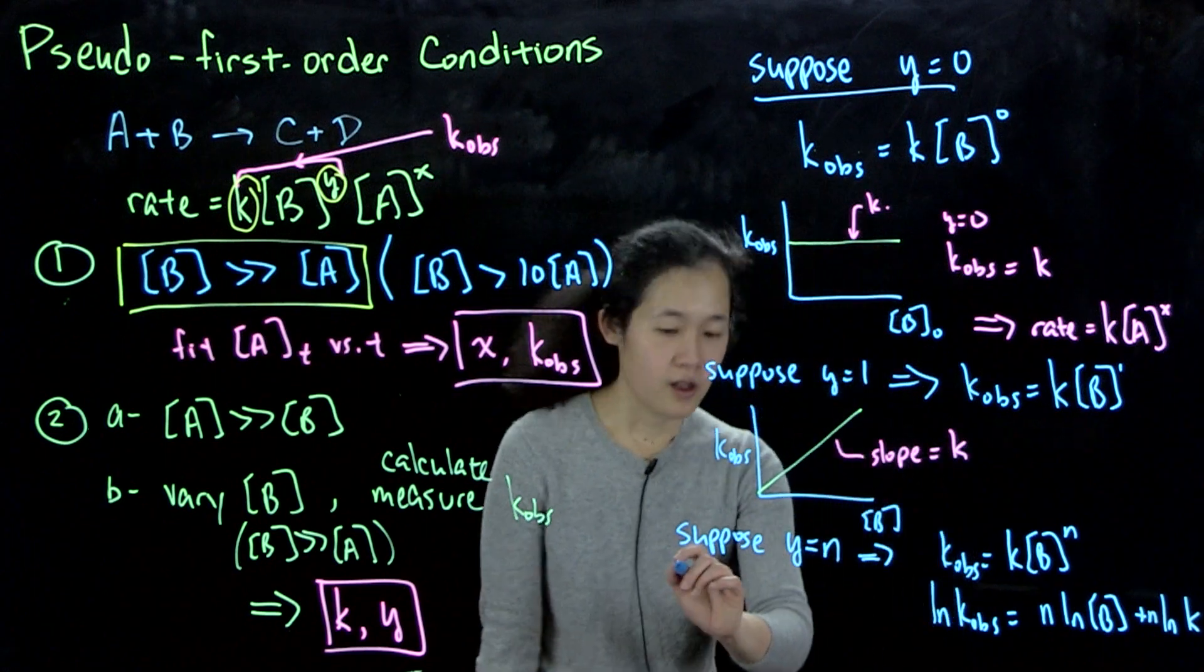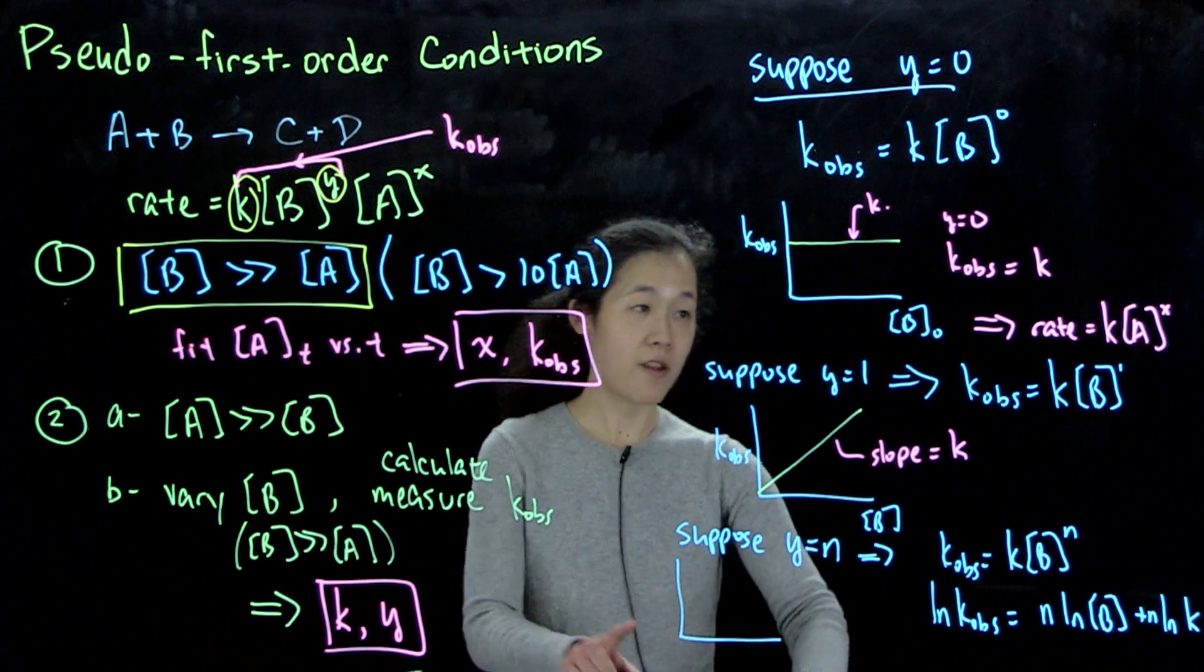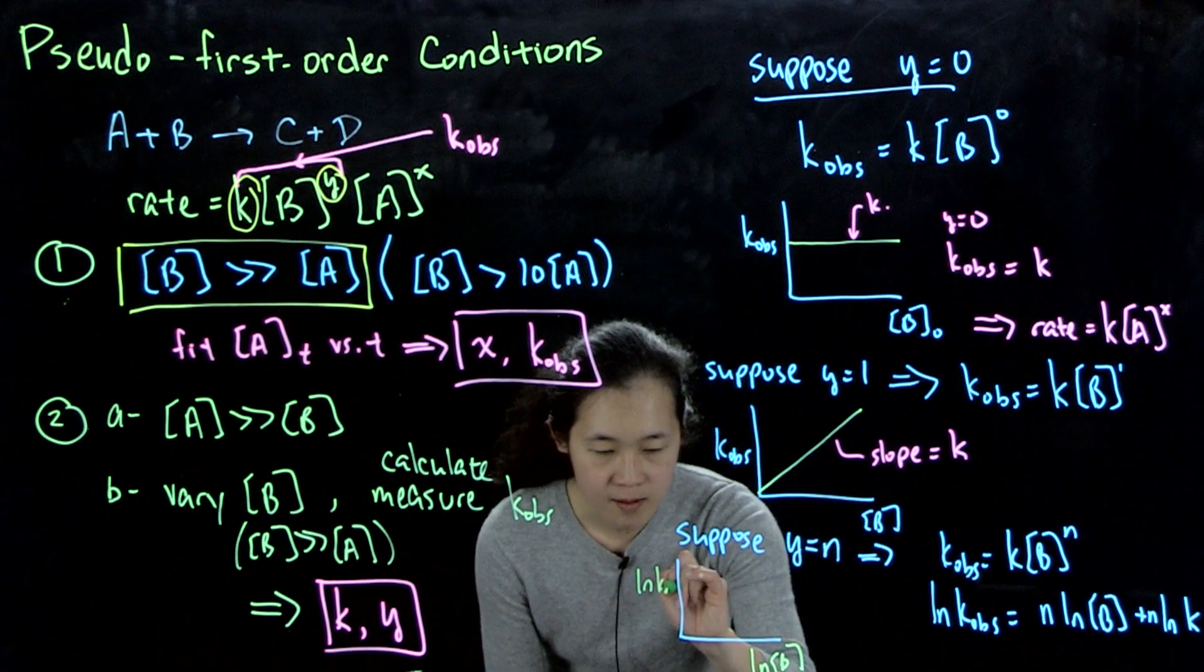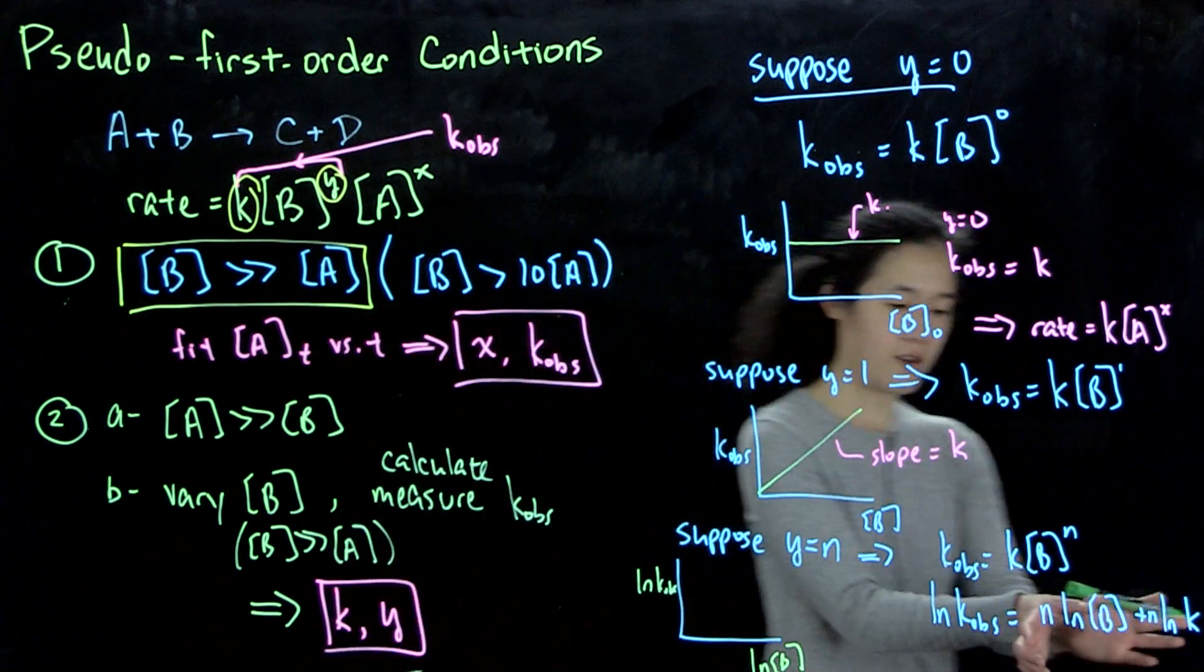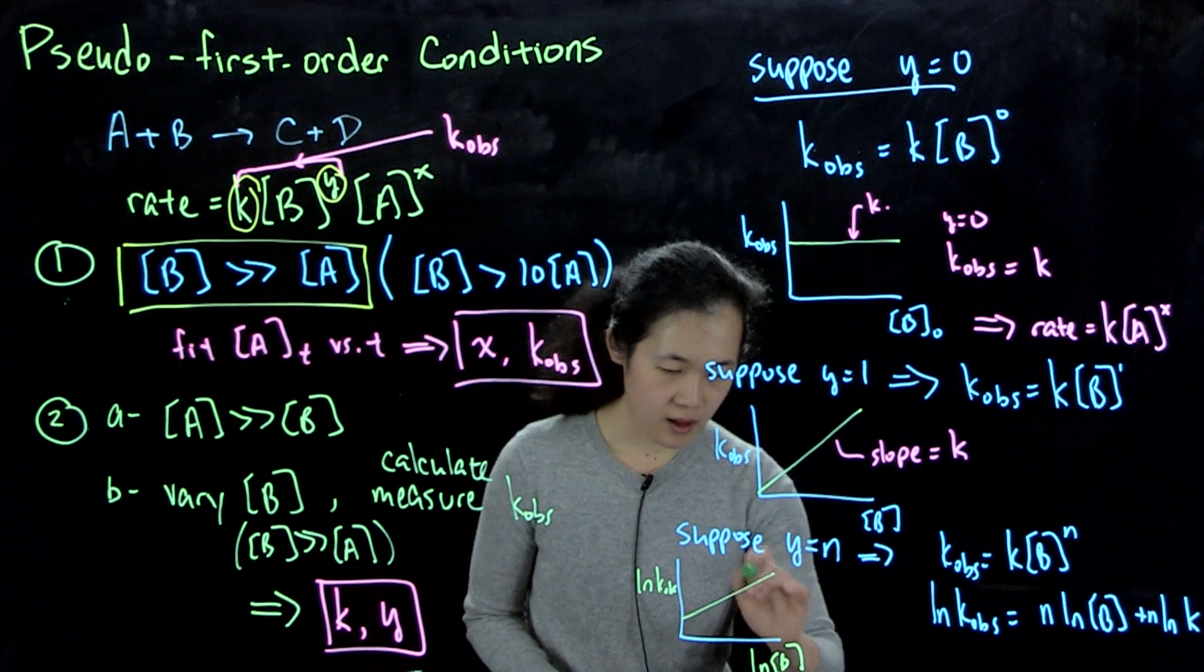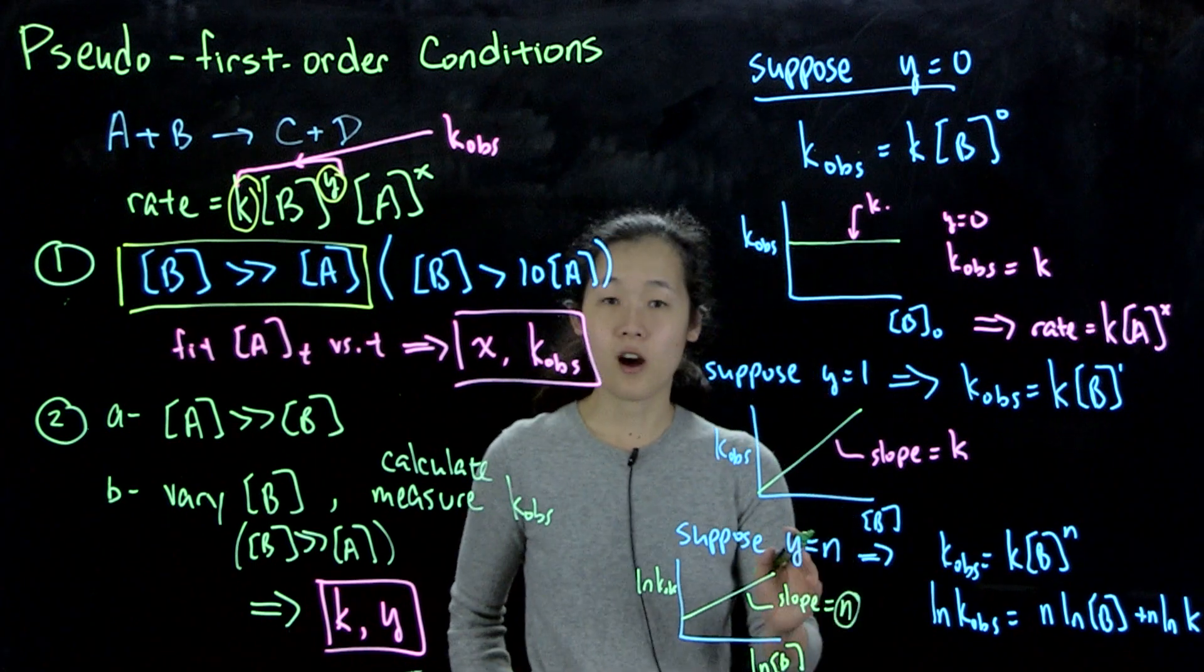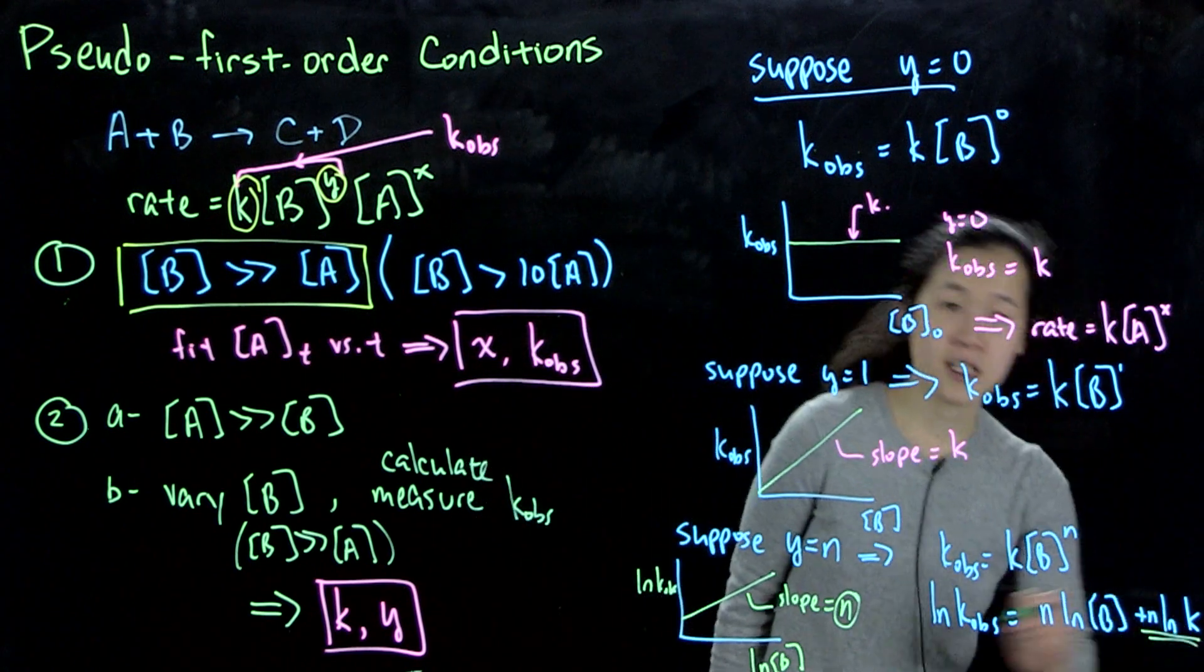So then if we were to plot this out, this should give us, what we want to do actually in this case, rather than plotting k_ob versus b, we want to plot log of b versus log of k_ob. And then this should give us some sort of line, where then our slope, so the slope will equal n. So this will be our power of b. And then the intercept here should then give us k.